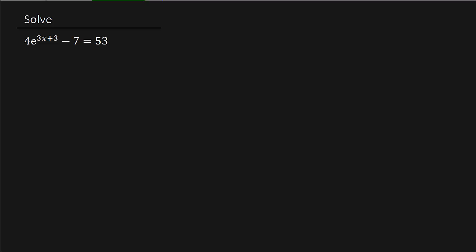How is everybody doing today? Well, we've got an equation here to solve. This is an exponential equation. We've got 4e raised to the 3x plus 3 minus 7 equals 53.